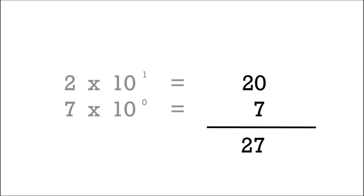So here's just that same example but with a smaller number. The number 27 can really just be expressed as 2 times 10 to the power of 1 plus 7 times 10 to the power of 0.